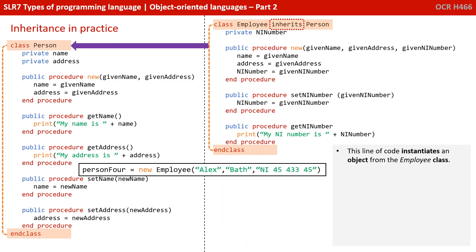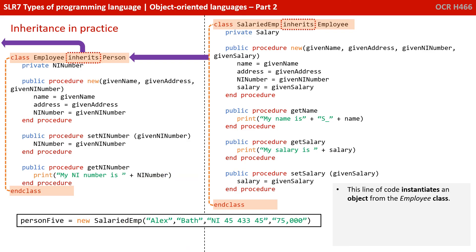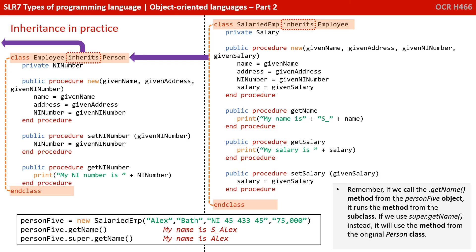This line of code instantiates an object from the employee class passing in the appropriate initial values for the constructor method. In this final example, we create another subclass for a salaried employee and we can see it inherits from the employee class, which itself inherits from the person class. This line of code instantiates an object from the employee class passing in the appropriate initial values to the constructor. Remember, if we call the getName method from the person5 object, it runs the method from the subclass because it overrides anything higher up that shares the same name. If we use super.getName instead, it will use the method from the original person class.